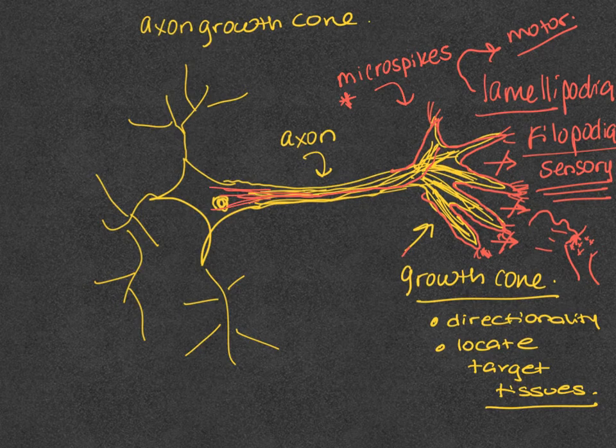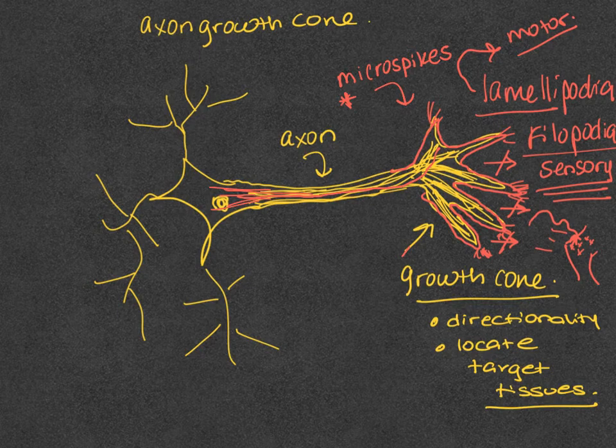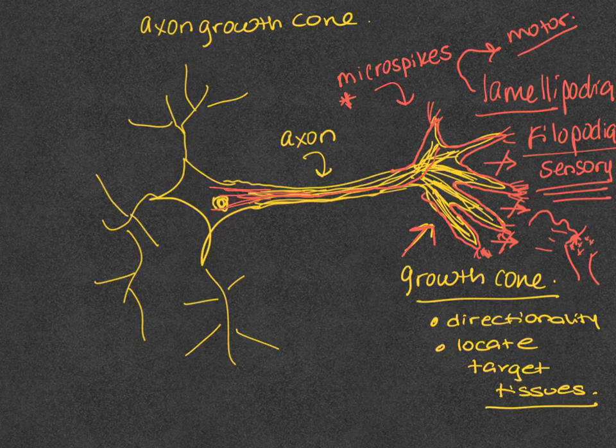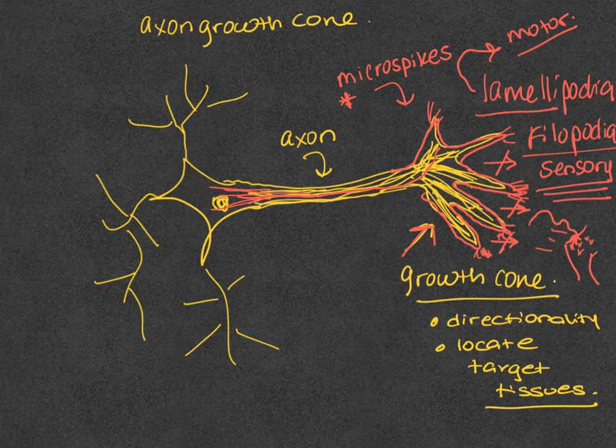So all this summarized in short is that basically the growth cone has the ability to sense the environment and translate the extracellular signals into a directed movement.